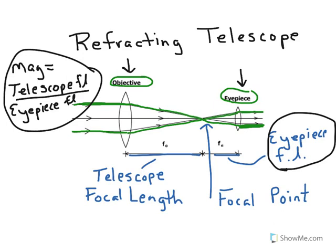And notice that it is an inverse relationship. So as eyepiece focal length increases, magnification decreases. So the longer your eyepiece focal length is, the lower the magnification you get. And the reverse, the shorter your eyepiece focal length, the higher the magnification.